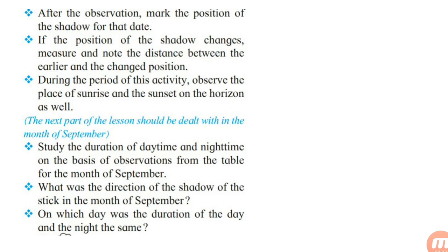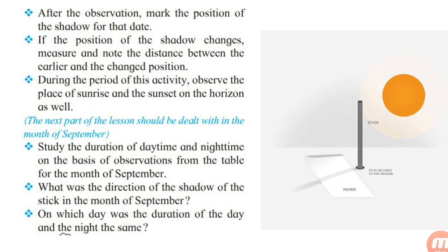After observing and marking the positions of the shadow during the day, measure the distance between the earlier and later positions. During the period of the activity, observe the place of sunrise and sunset horizontally. Study the duration of daytime and nighttime on the basis of observations from the table for the month of September. What duration does the shadow stick show in the month of September? On which day was the duration of day and night equal? All these things you can observe by doing this experiment at home.